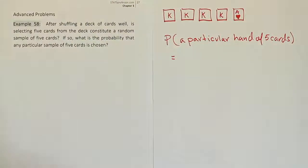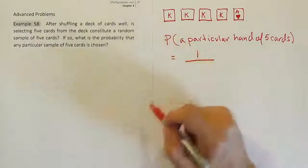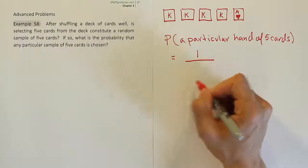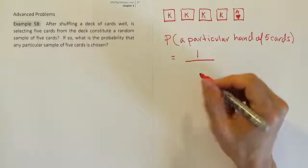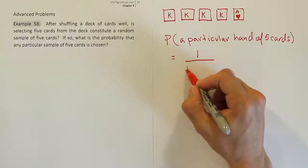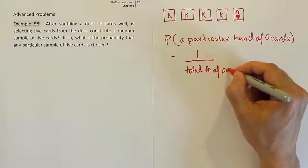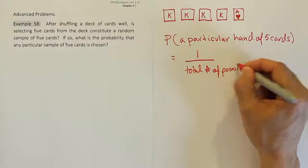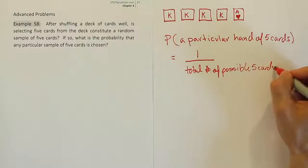Well, the answer to that is pretty simple. There's only one hand like that. The difficult part is the total number of possible hands. So this part here would have to be what? The number of hands like this is one. The total number of possible five card hands, though, is not so easy.